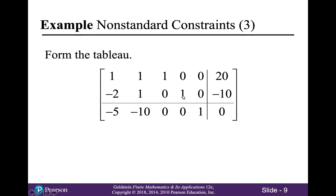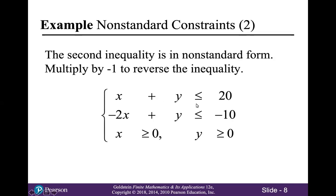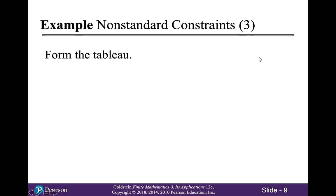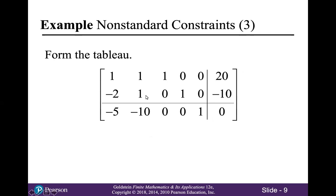We have two slack variables u and v. Changing the inequalities into equations gives: x plus y plus u equals 20, and negative 2x plus y plus v equals negative 10. From the objective function, we're maximizing M equals 5x plus 10y. Subtracting 5x and 10y from both sides gives negative 5x minus 10y plus M equals zero. I'm ready to switch over to the tablet to show what to do next.